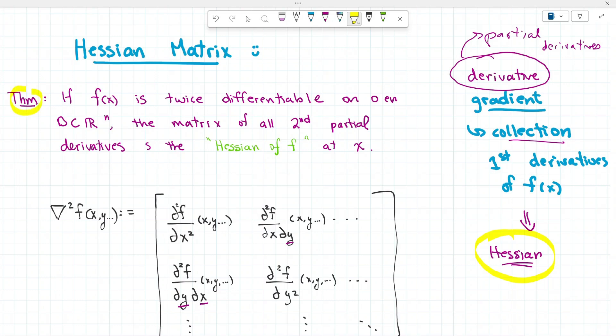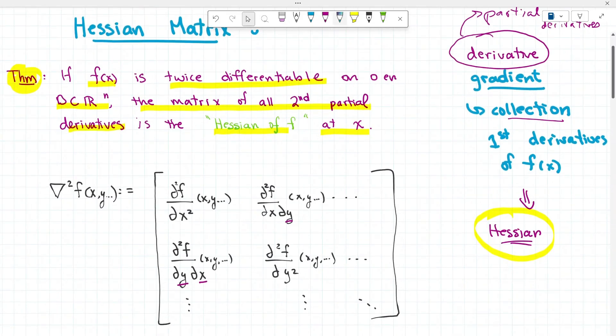Let's look at the formal theorem. If f of x is twice differentiable on some open region D, which is a subset of R^n space, then the matrix of all second partial derivatives is known as the Hessian of f at x.